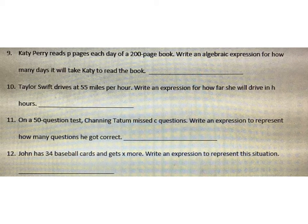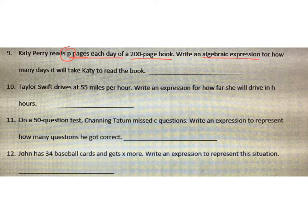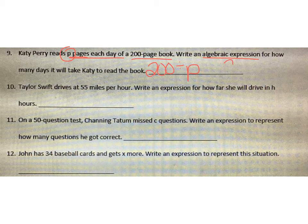Katy Perry reads P pages each day of a 200-page book. Write an algebraic expression for how many days it will take Katy to read the book. We've got our variable P, and it's 200 pages total. We want to figure out how many days it will take her — so it's division. You have 200 pages divided by P pages each day. It's an expression, so no equal sign or answer. You could also write this as 200 over P, because the fraction bar means division.